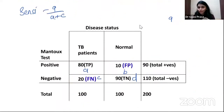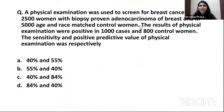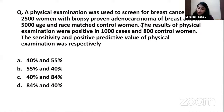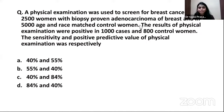Let's go to a previous MCQ. A physical examination was used to screen for breast cancer in 2,500 women with biopsy-proven adenocarcinoma of breast and 5,800 age-matched control women. The results of physical examination were positive in 1,000 cases and 800 control women. Find out the sensitivity and positive predictive value of the physical examination.